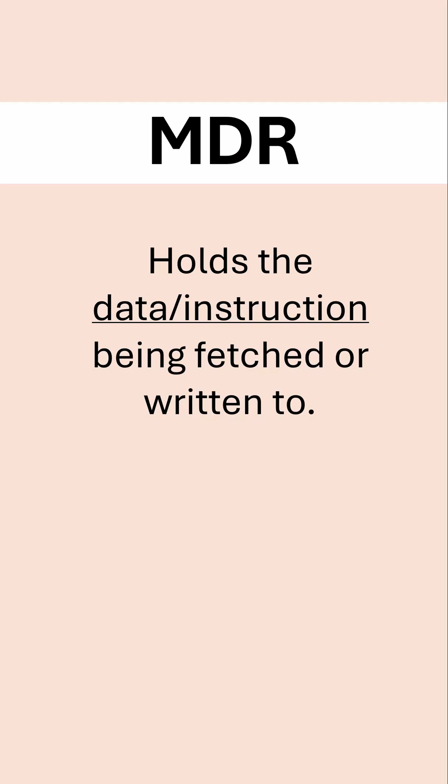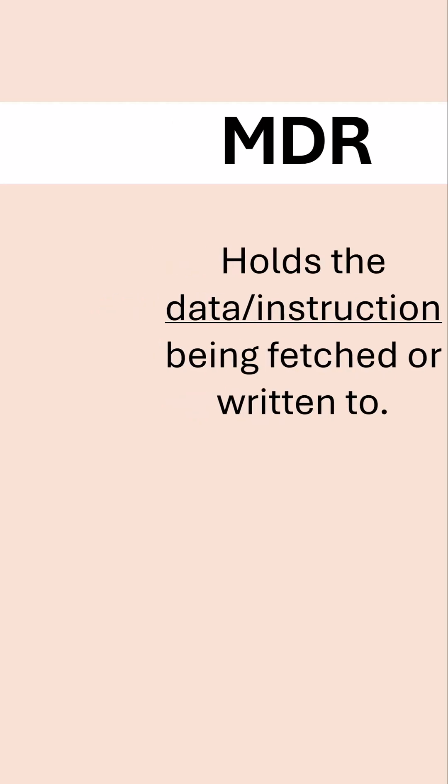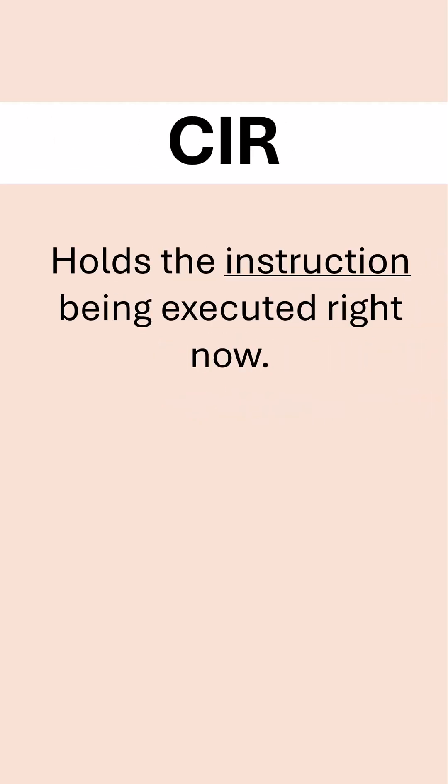The MDR holds the actual data or instruction being fetched or written to. The current instruction register does what it says on the tin — it holds the instruction being executed right now.